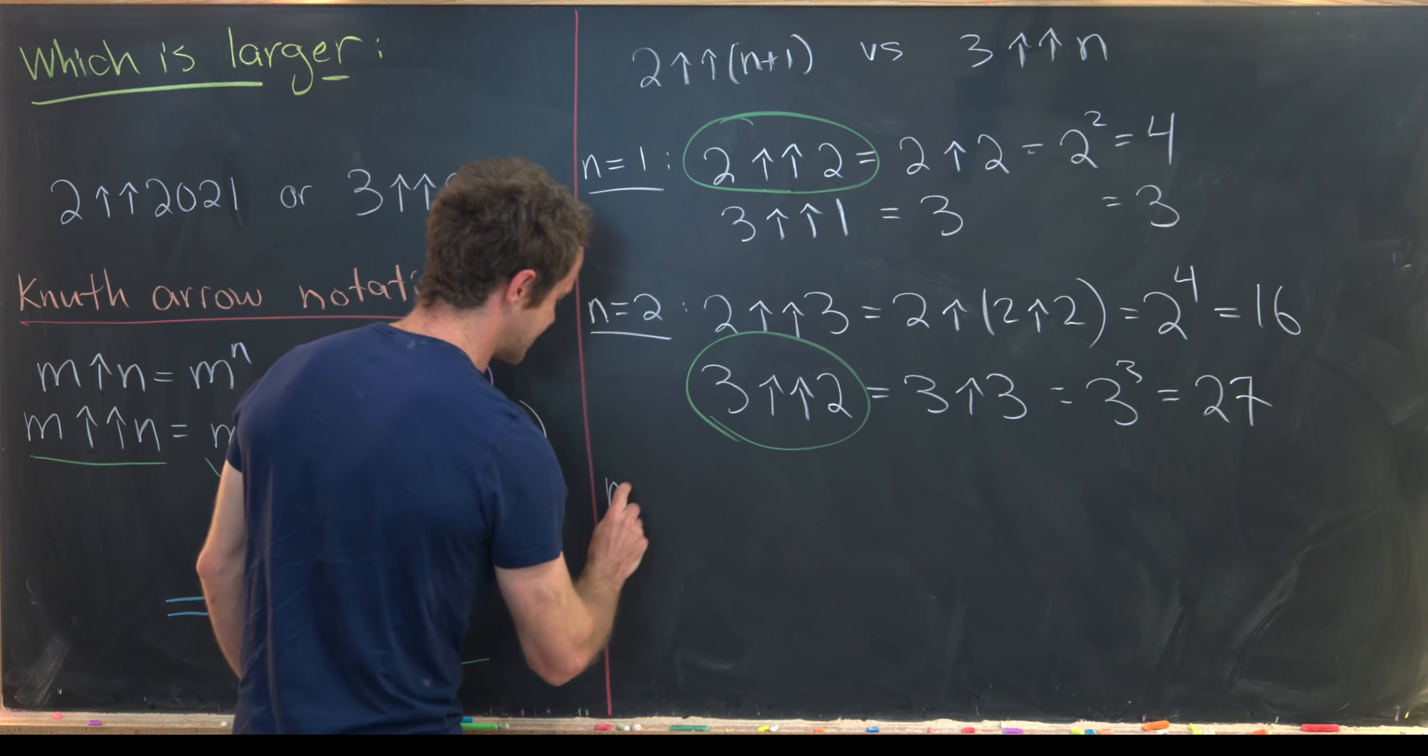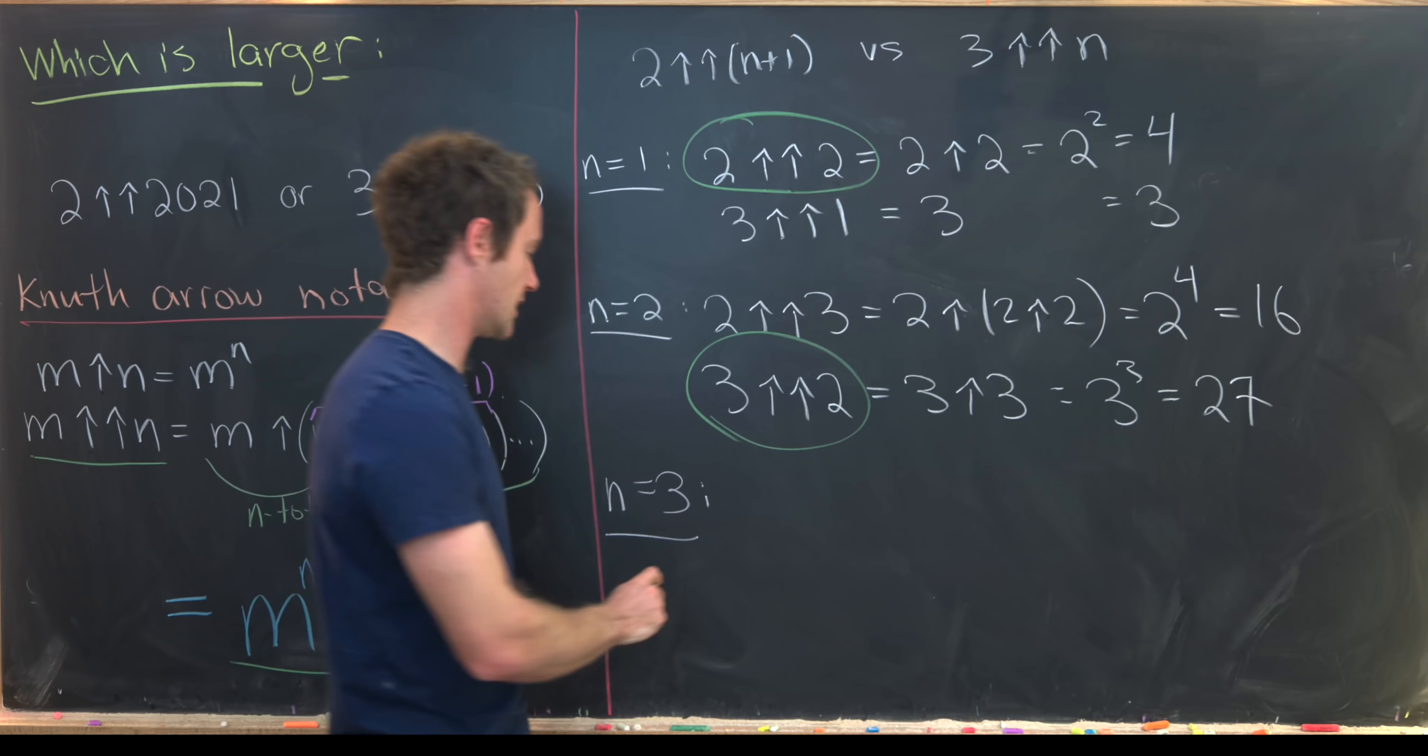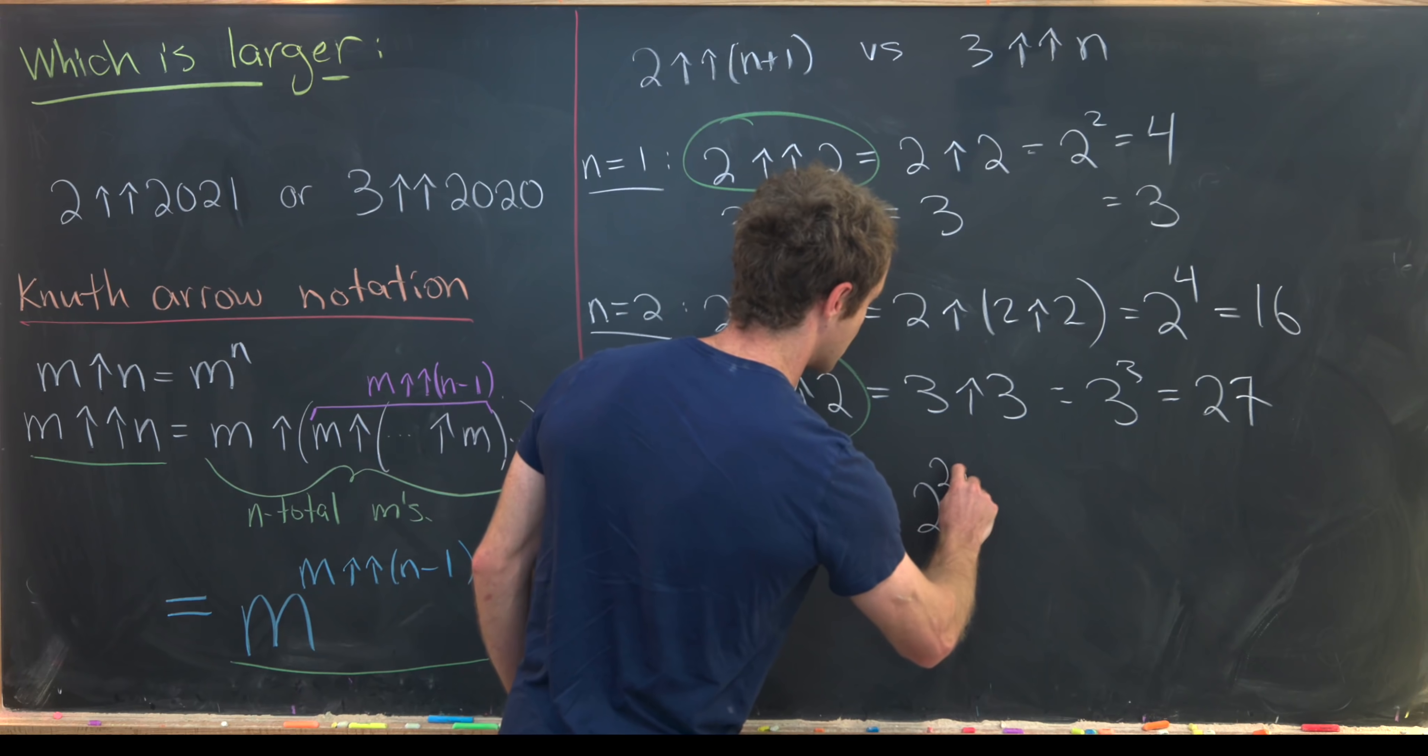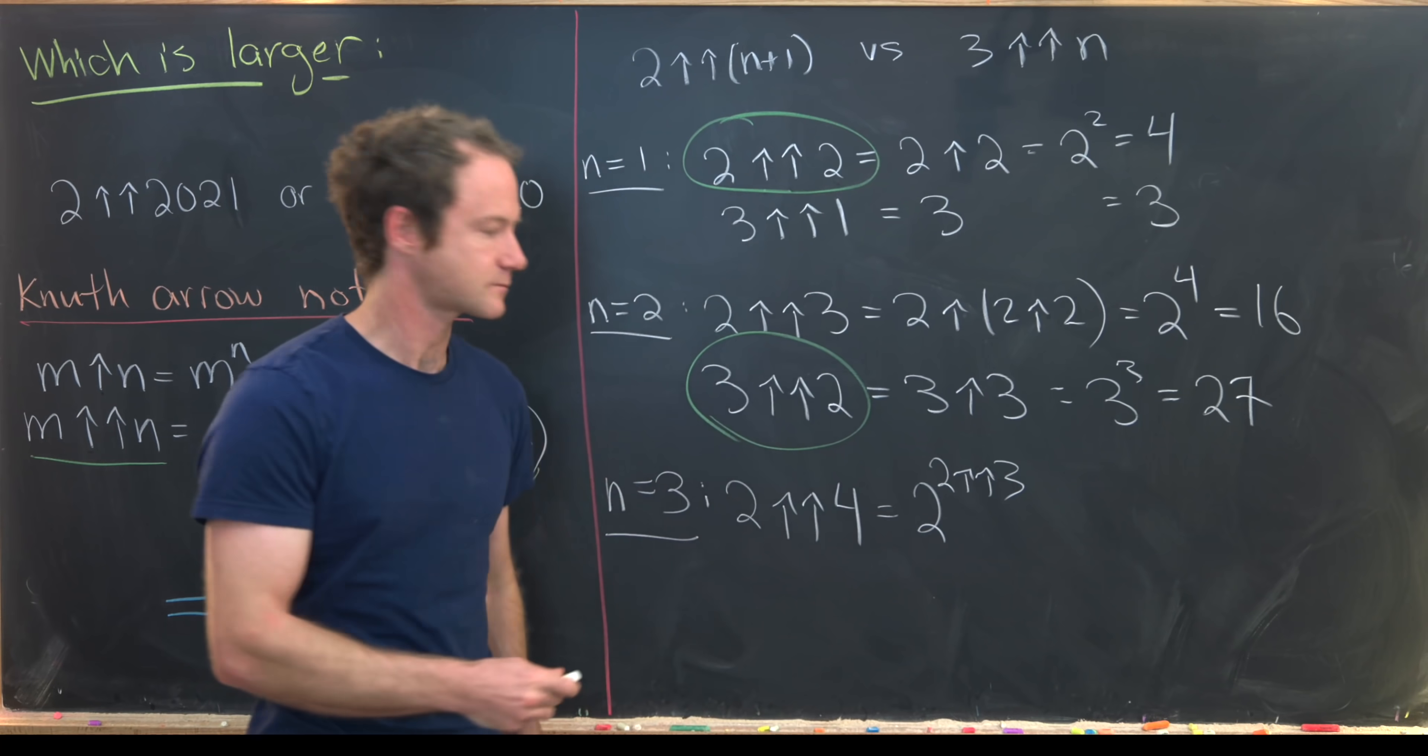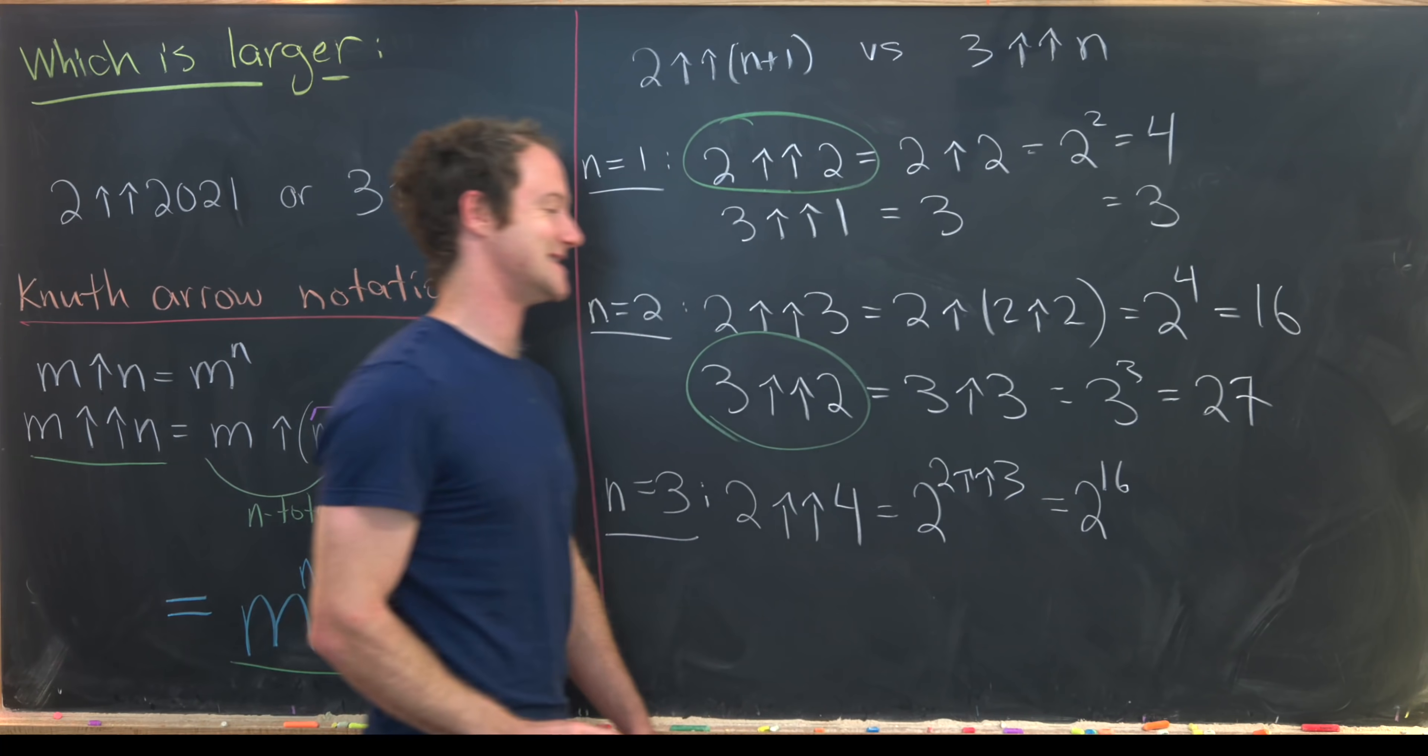Let's move on to one more case which is n equals 3. And I think this will give us a general idea for what's going on. So 2 double up arrow 4. Well that's going to be the same thing as 2 to the power 2 double up arrow 3 from this thing that we saw over here. But notice that that is equal to 2 to the 16.